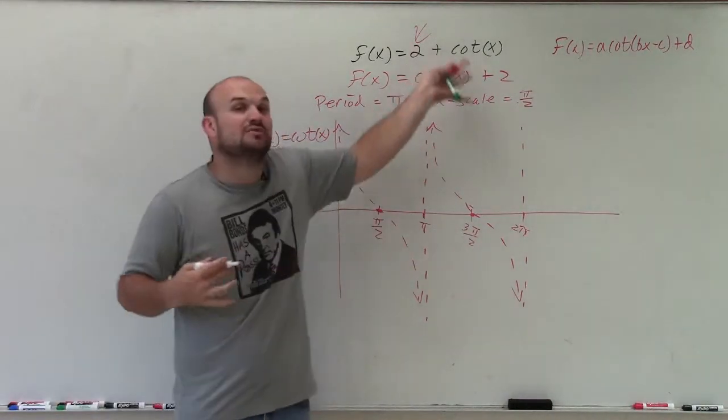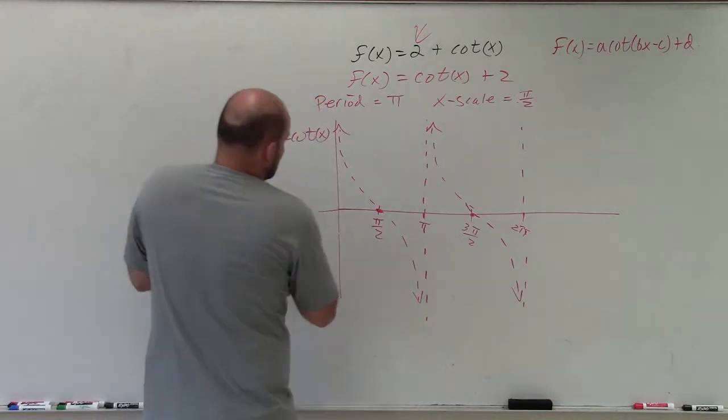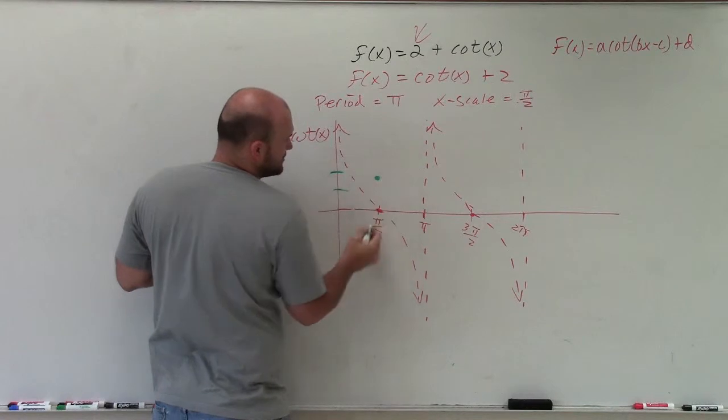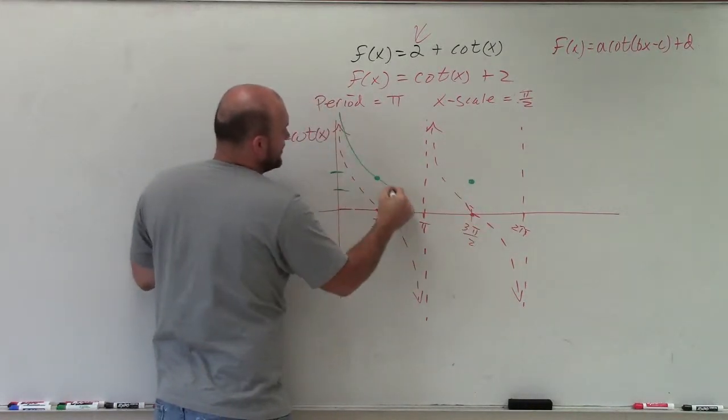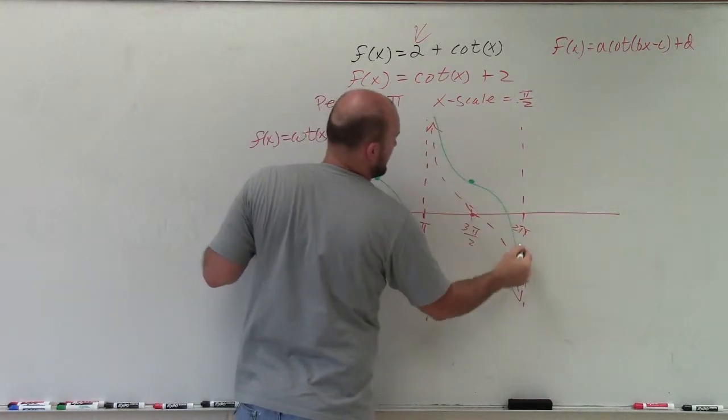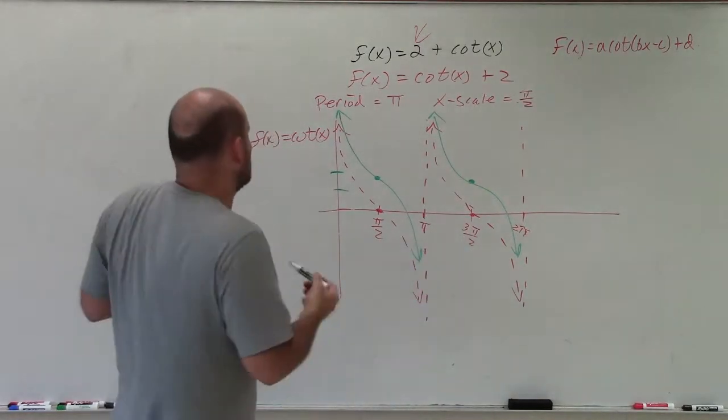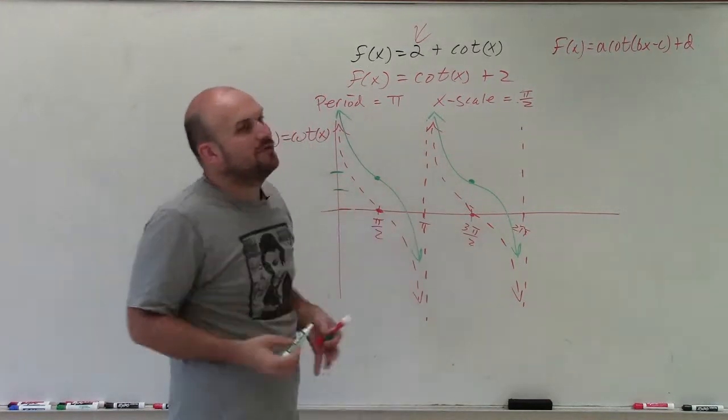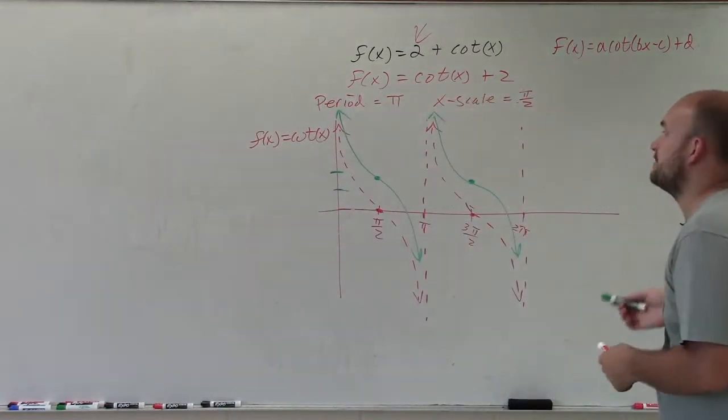But I want to graph cot(x) + 2, or 2 + cot(x). So all I'm simply going to do is go up two units. Take this x-intercept up two units—one, two. Now I just follow the exact same pattern. I'm just estimating the curves. If you want to use an x-scale of 4, you could easily figure out where exactly this value is, or use your table function to find it. I just want to estimate and get you close with the transformations.